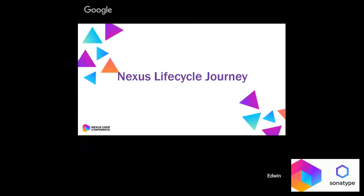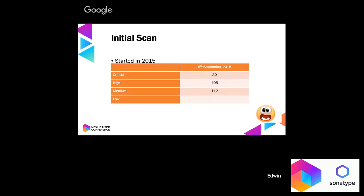Now let's talk about our Nexus lifecycle journey. This journey started at around the same time as our application security journey — back in 2015, when we were working towards getting a banking license. We did what most people would do when they first started using Nexus lifecycle: we installed it and ran it for the very first time against all of our applications. The results from that scan, done on September 6, 2015, showed 80 critical security issues, 405 high, and 112 medium.